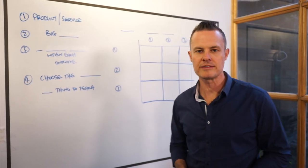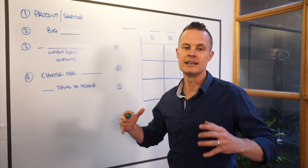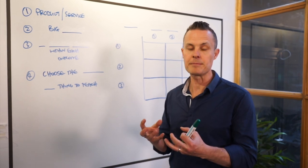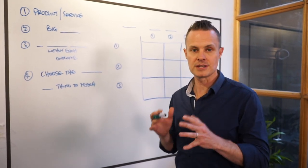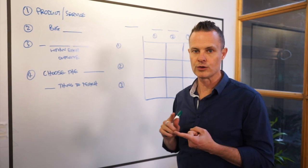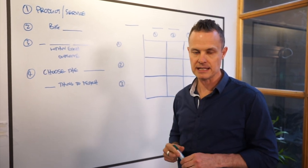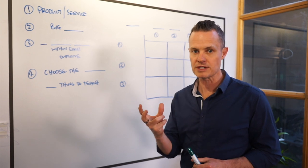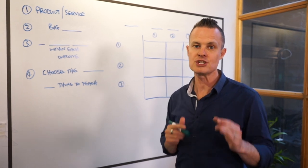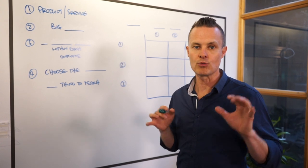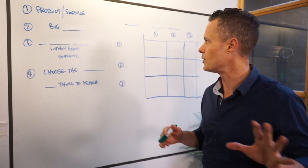Hey gang, Troy Dean here. I just got off a call with one of our Mavericks Club members and we were talking about how to produce great shareable content to bring in inbound organic leads, and also have a great piece of content to use in paid advertising strategies and to share with joint venture partners. This video has two parts: how to decide on the piece of content you're going to produce, and then a framework to produce it.